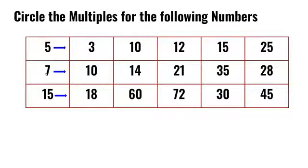In the next row, we have to circle the multiples of 7. 7 twos are 14, 7 threes are 21, 7 fours are 28, 7 fives are 35. 14, 21, 28, and 35 are some of the multiples of 7.